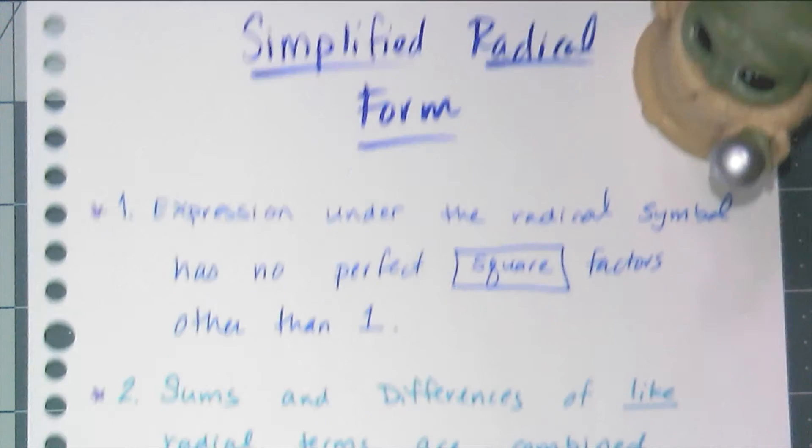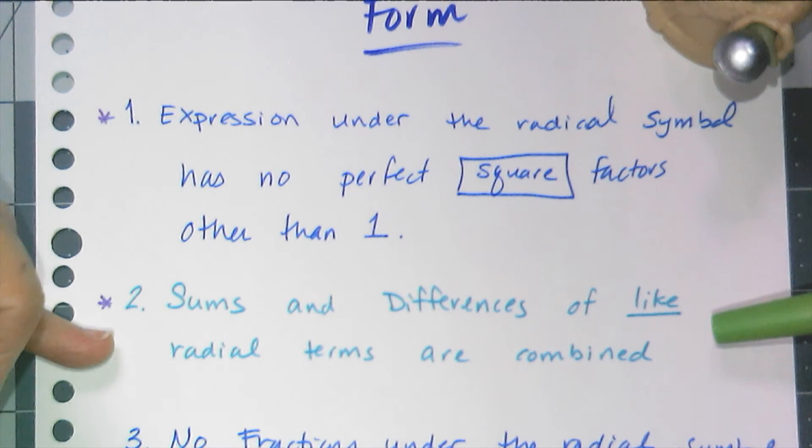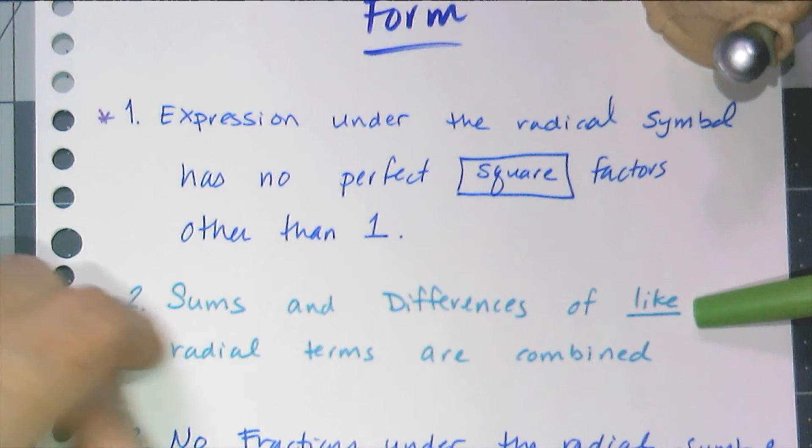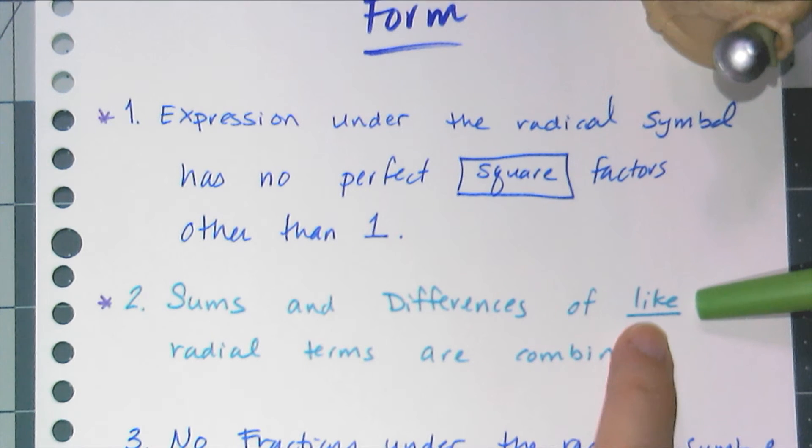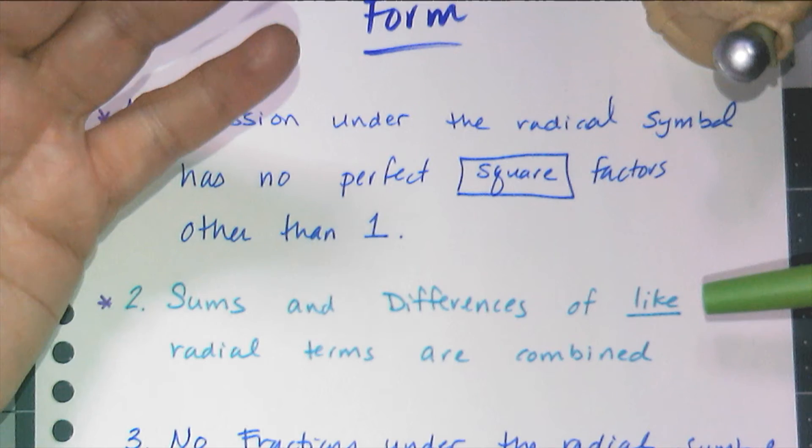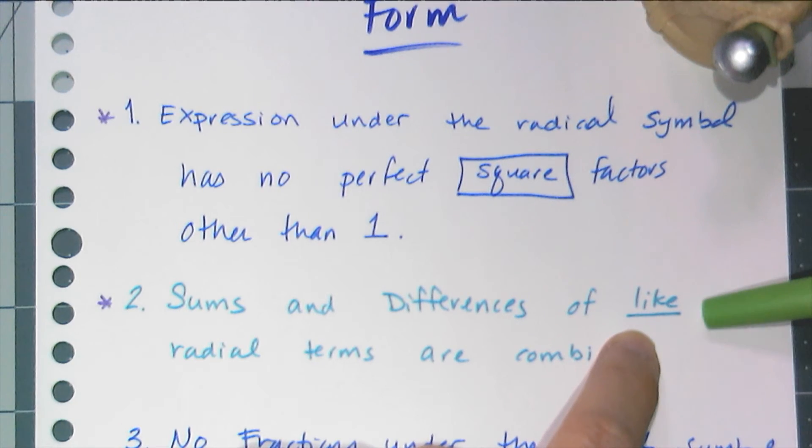Alright, now sums and differences of like radical terms have to be combined. Like radical terms are values where underneath the square root you have the same value. Like the square root of 2 plus the square root of 2, that's not simplified. But square root of 2 plus the square root of 7, that is simplified because they're not like radical terms.